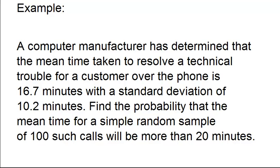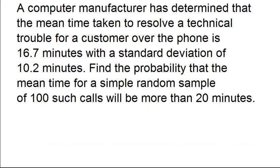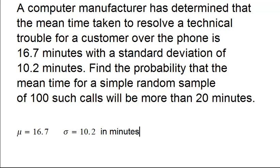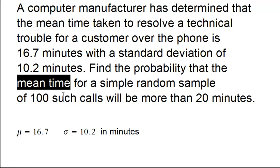Looking at the population — that is, the times for all the calls — we have the population mean mu equal to 16.7 minutes and the standard deviation equal to 10.2 minutes, in minutes. We are interested in knowing about the distribution of sample means for simple random samples of 100 calls.